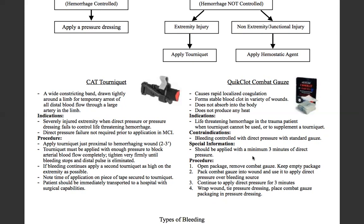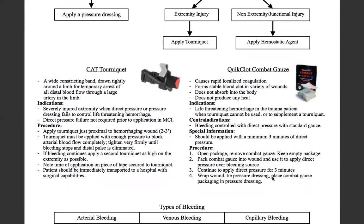Procedure: number one, open up the package, remove the combat gauze, and keep the empty package — do not throw it away. Number two, pack the combat gauze into the wound and use it to apply direct pressure over the bleeding source. If you can find the artery or the vein, depending on what the bleeding source is, apply direct pressure on the vessel. Continue to apply direct pressure for three minutes. Wrap the wound, tie the pressure dressing, and place the combat packaging inside the pressure dressing, so when you get to the hospital and they take it out, they have the removal directions from the manufacturer right there on the table.